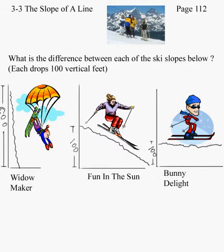And as we look at the difference of them, since they all have a hundred vertical feet drop, the difference is that that hundred vertical feet drop has a different amount of horizontal space that it drops a hundred feet in. Less, a little bit more, and much more with Bunny Delight as we go across.